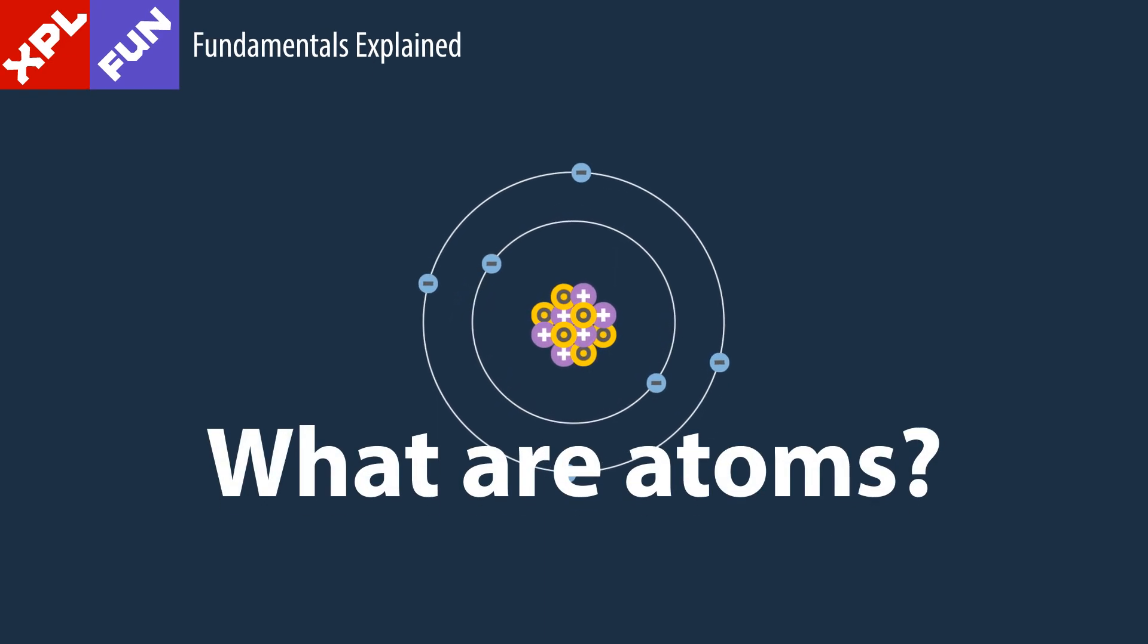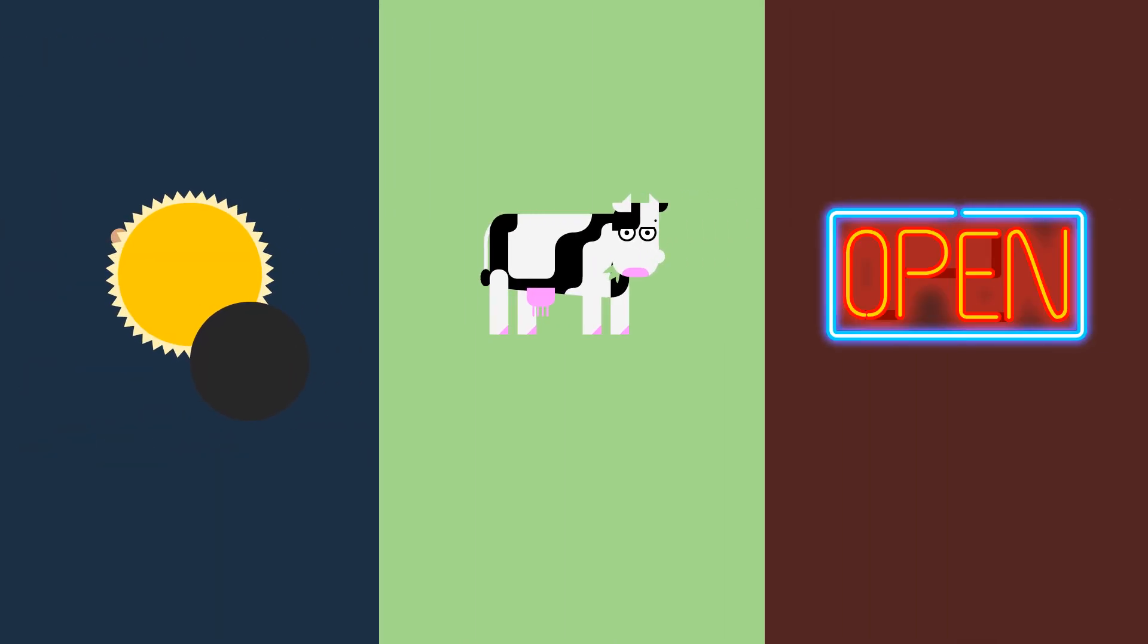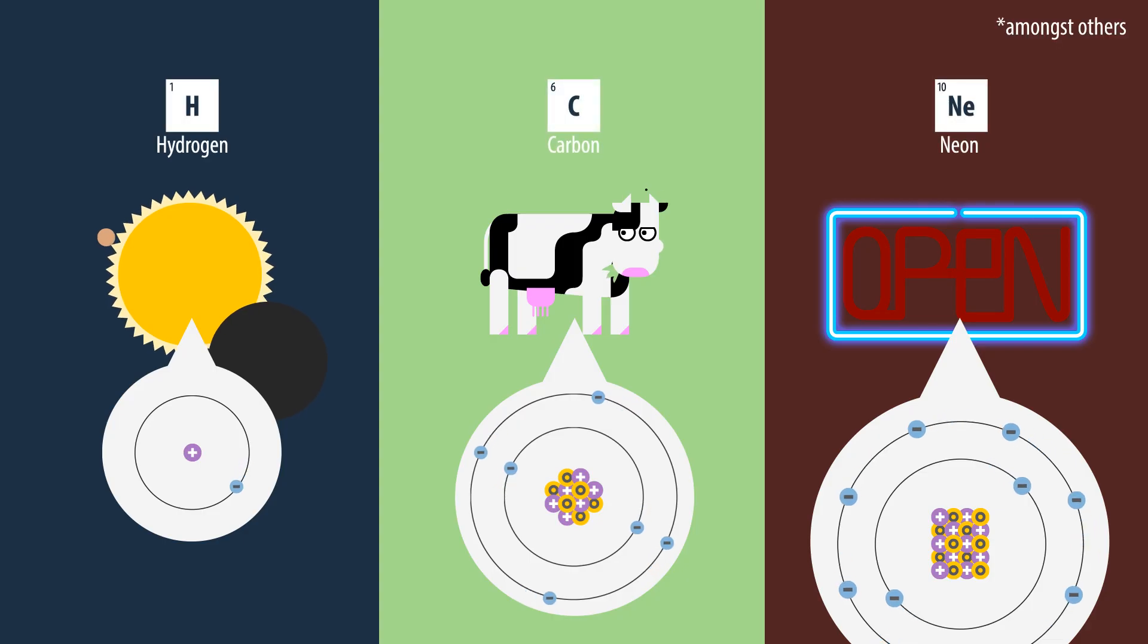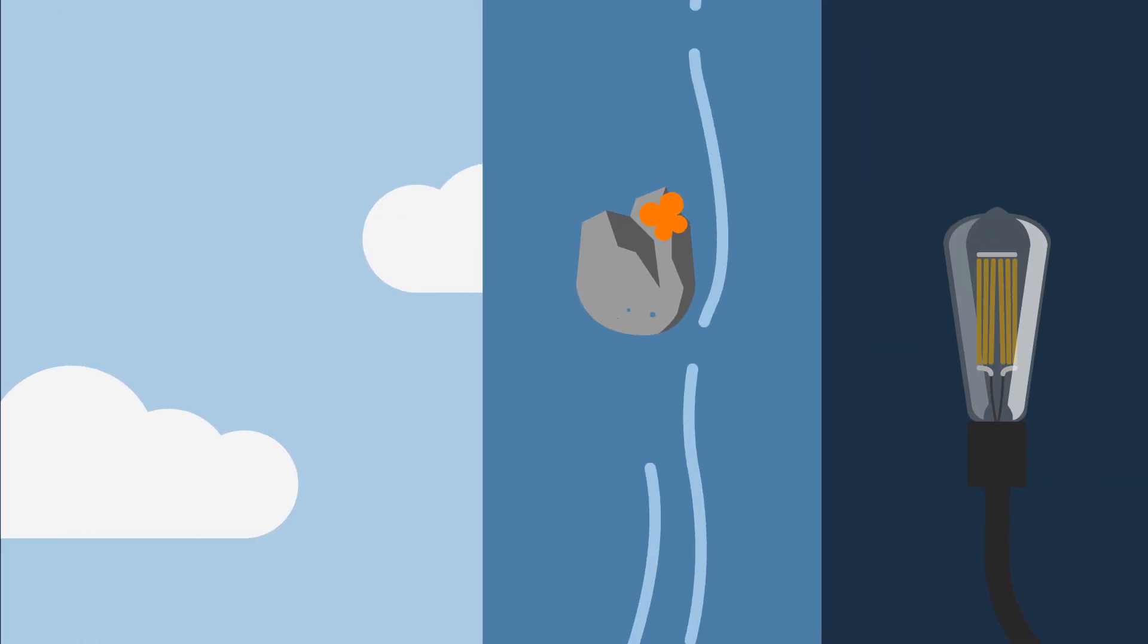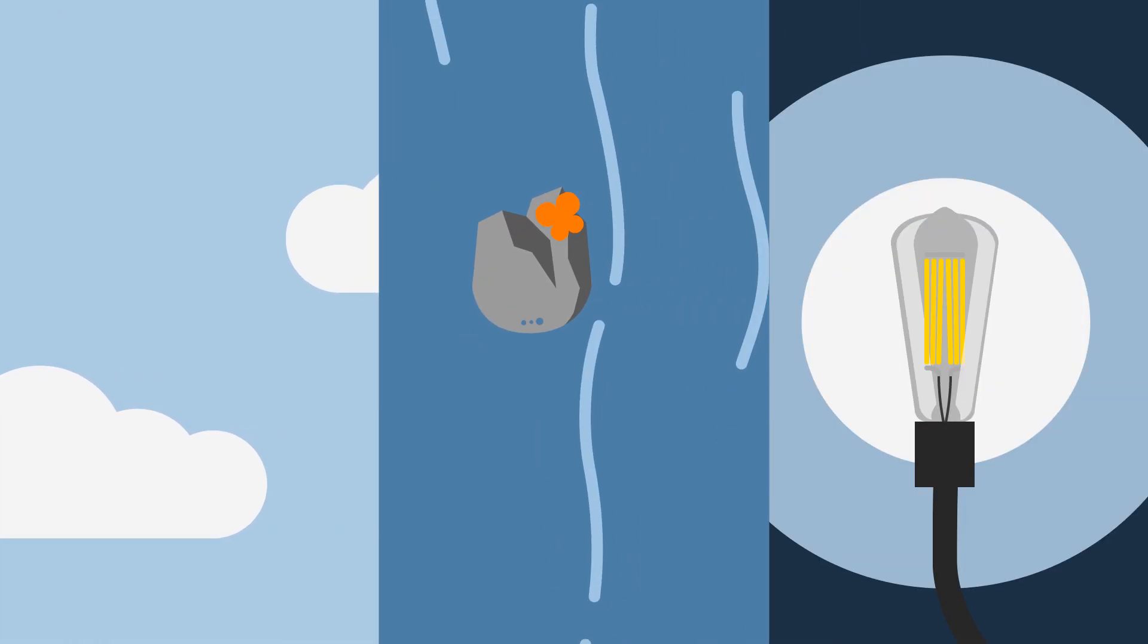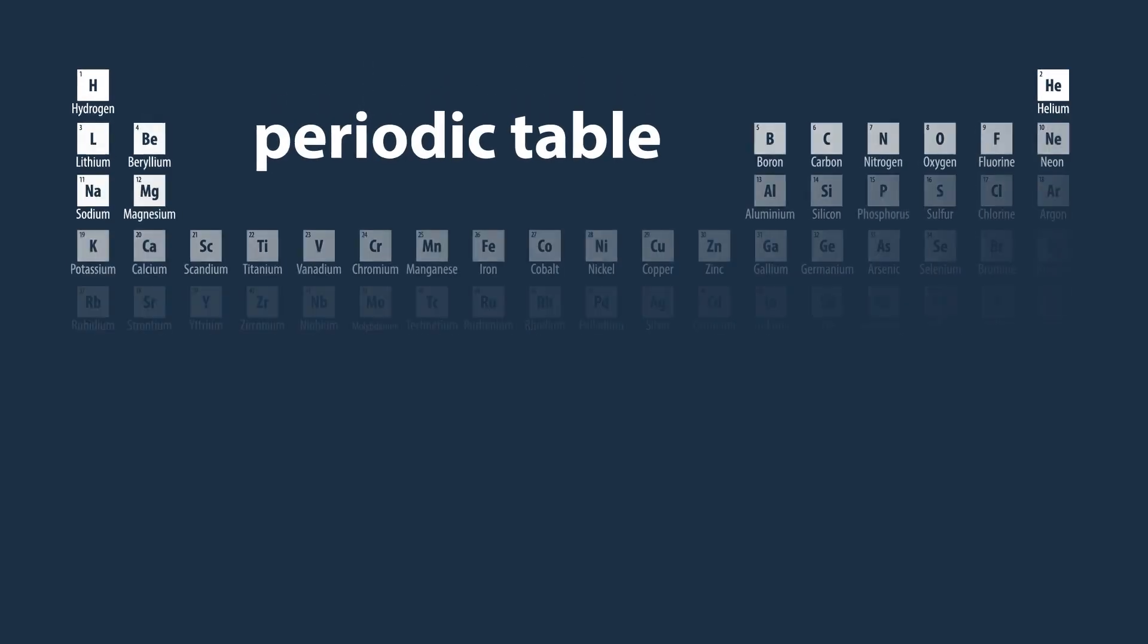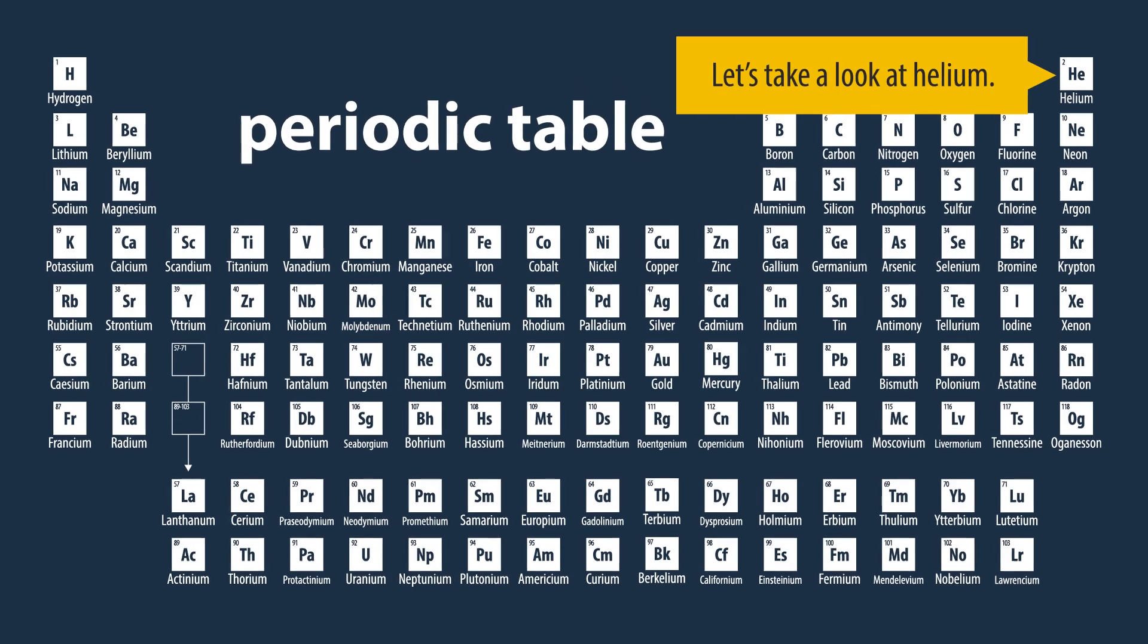What are atoms? Everything is made up out of atoms. Atoms are responsible for the properties of everything. The periodic table lists all the species of atoms we know can exist.